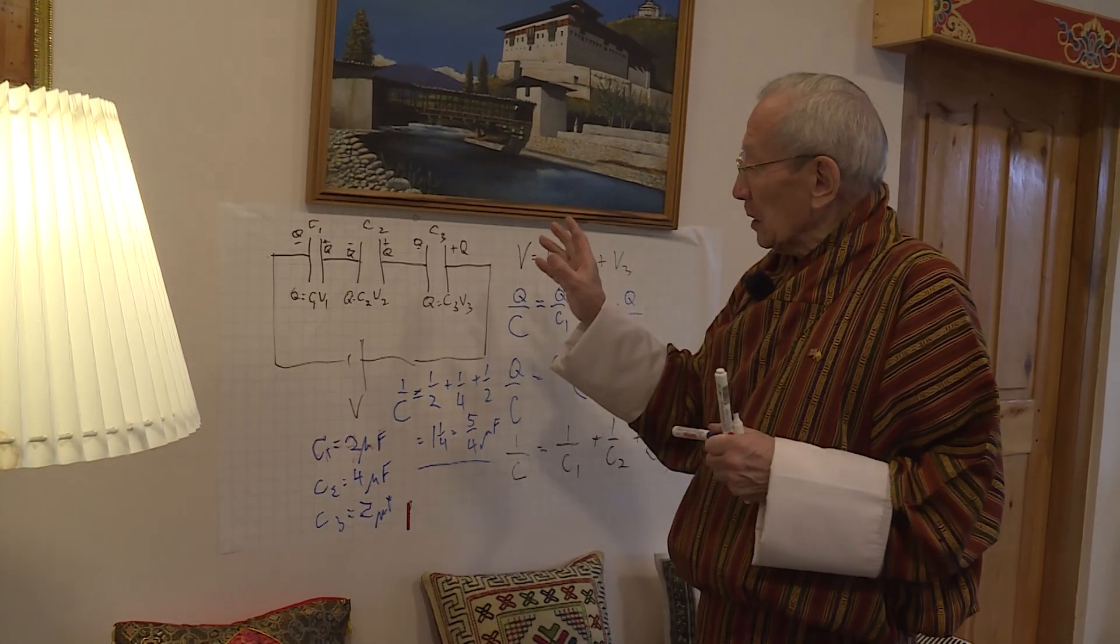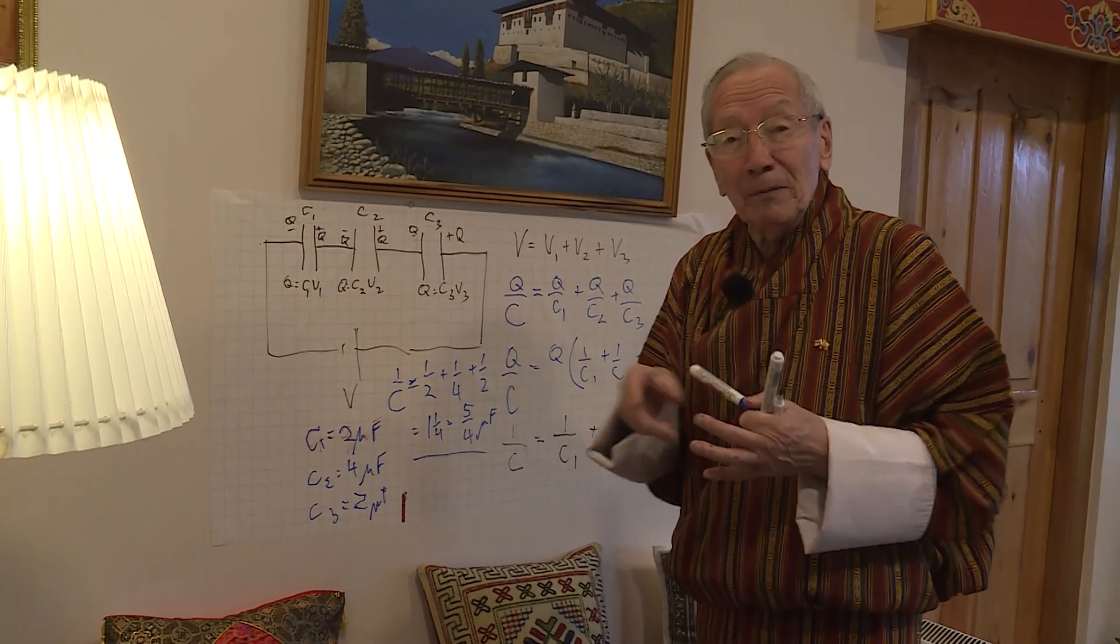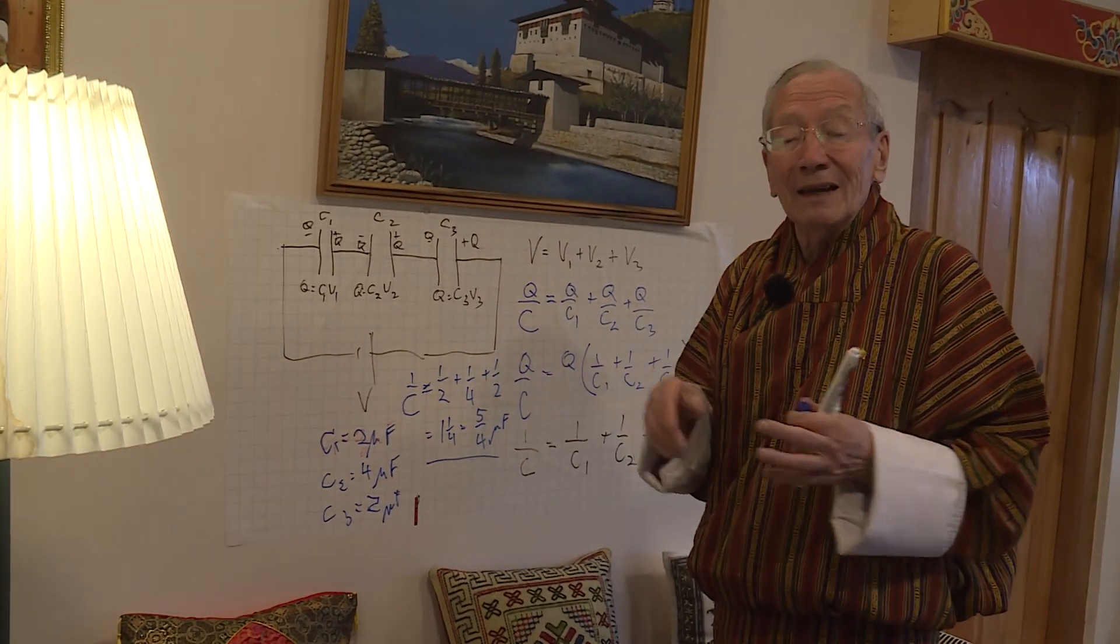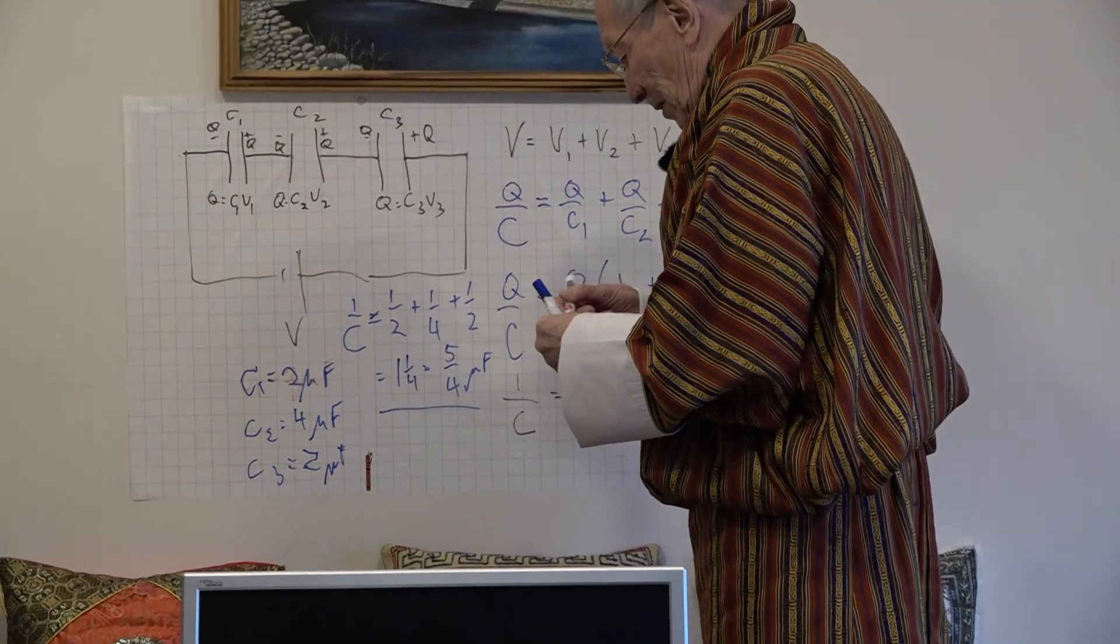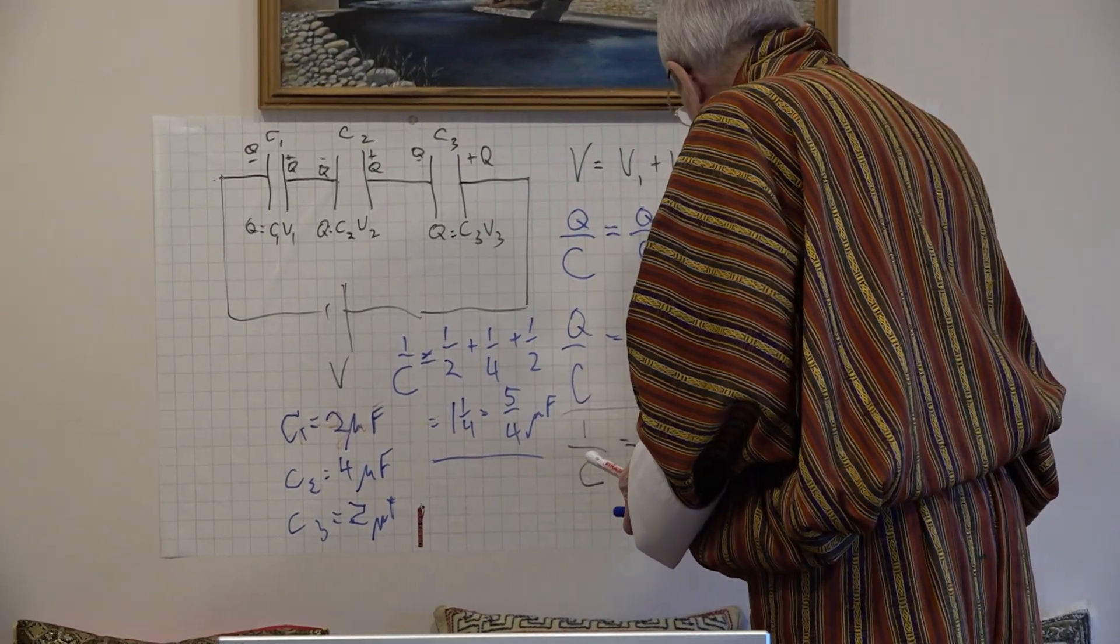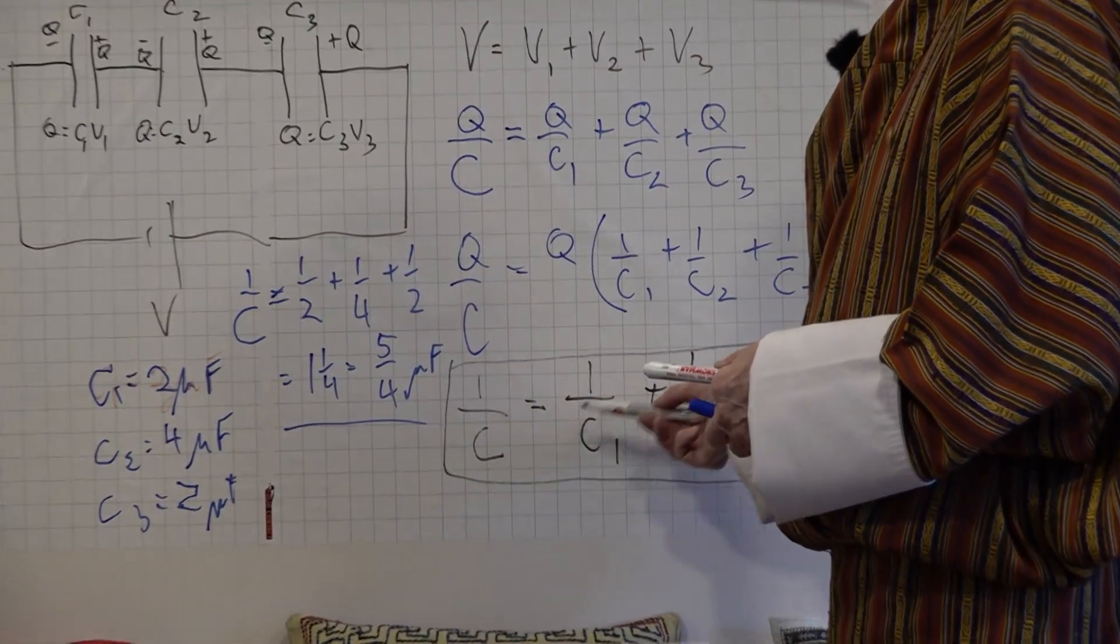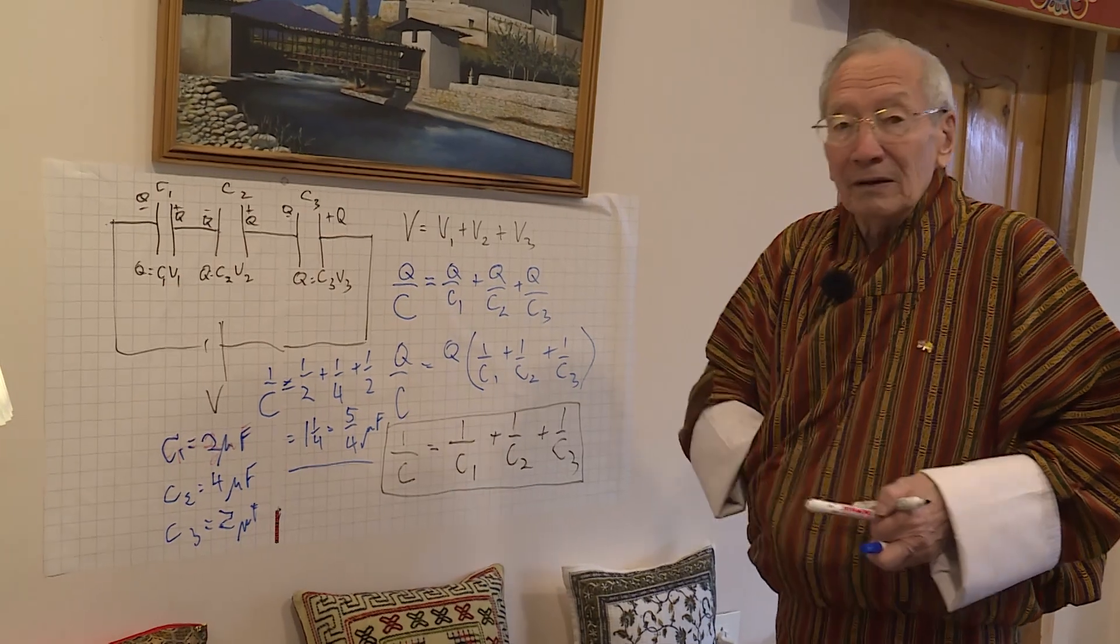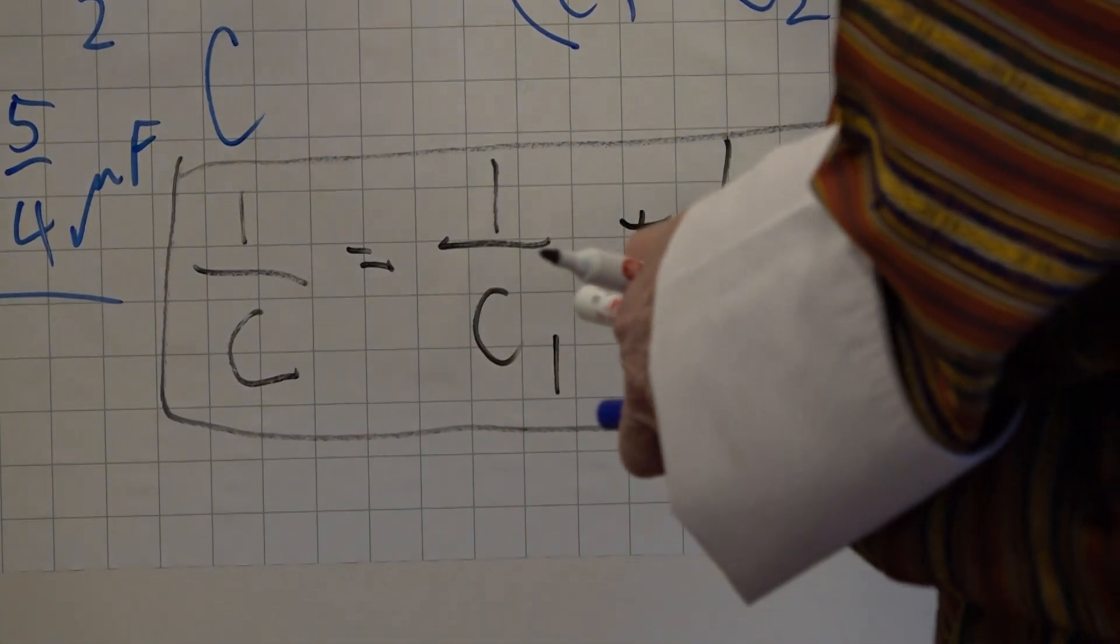So, if I want to combine three capacitors to get a smaller value of capacitance, I combine them in series and I'll get a smaller capacitance. Whereas if I combine them in parallel, I get a bigger capacitance. Now, this is the formula you need to remember. Capacitors in series: 1 over the resulting capacitance equals 1 over C1 plus 1 over C2 plus 1 over C3. And I don't know whether you've learned about resistors in series and parallel, because it's dead simple.